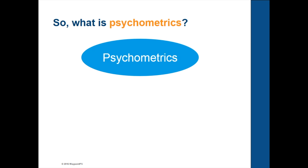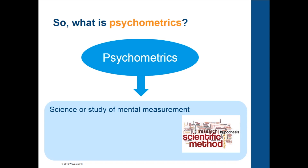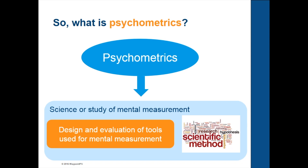So let's start with the definition of psychometrics. Psychometrics, as you might have guessed, is the science or study of mental measurement, or more specifically the design and evaluation of tools used for mental measurement. When I say tools, it could be as simple as a quiz or final exam in your classroom, or as complex as certification or licensure exams. So psychometricians are interested in designing tests and assessments that will accurately evaluate some of those qualities like intelligence, personality, values, and so on, that make us all unique individuals.